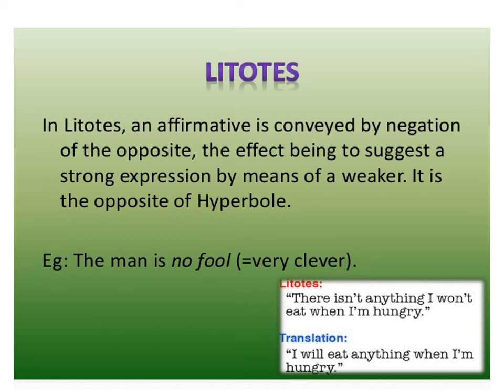Litotes means an affirmative is conveyed by negation. Instead of directly saying 'the man is clever,' I say 'the man is no fool' — there is a negative word, but the meaning is positive. Another example: 'There isn't anything I won't eat when I'm hungry' — meaning I eat everything when hungry. Using negation to convey a positive sense is litotes.